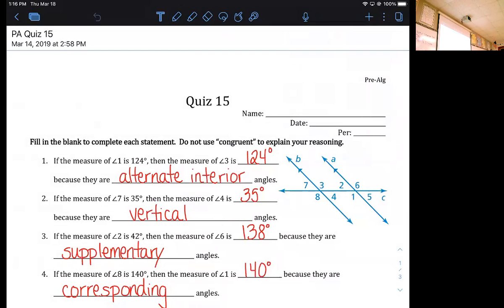Okay, so on your quiz the first four questions are a little bit of math and a little bit of vocab. For number one, it says if angle one, which is this angle here, if angle one is 124 degrees then the measure of angle three is what? Well, because angle one and angle three are both inside the parallel lines and on the opposite sides of the transversal, we call them alternate interior angles.